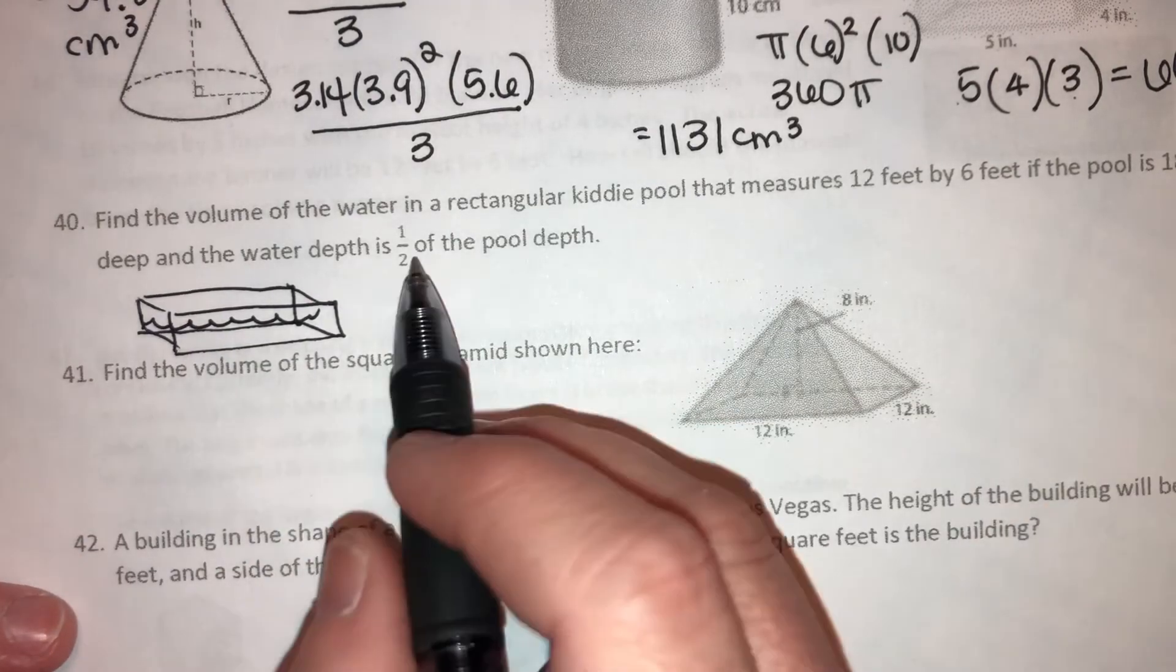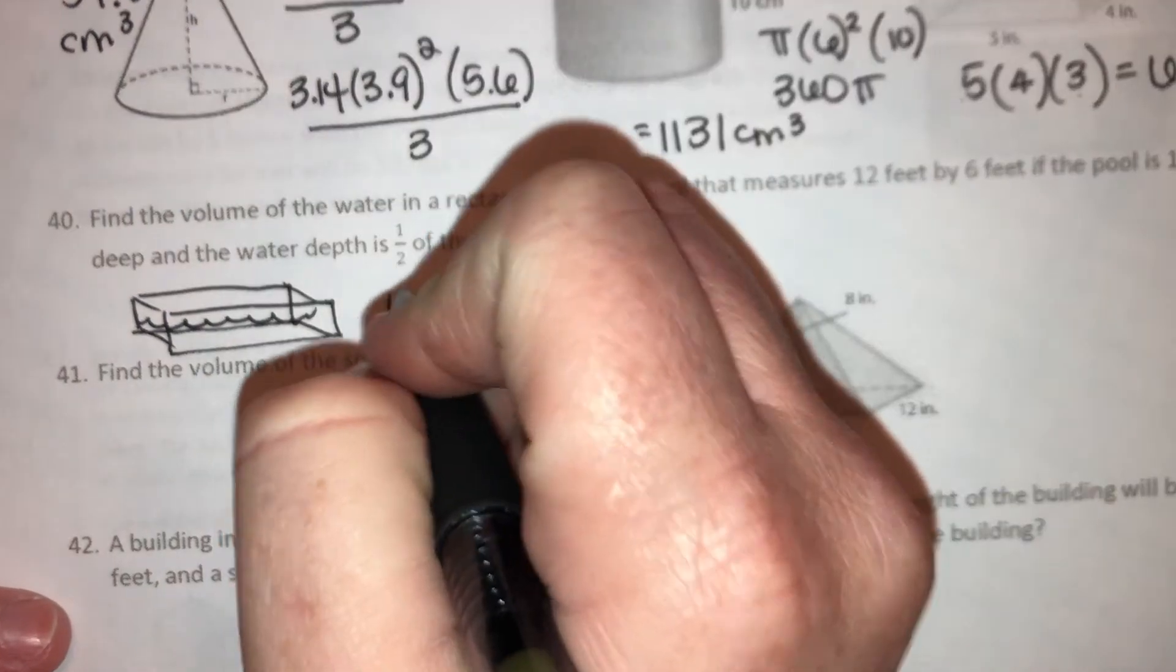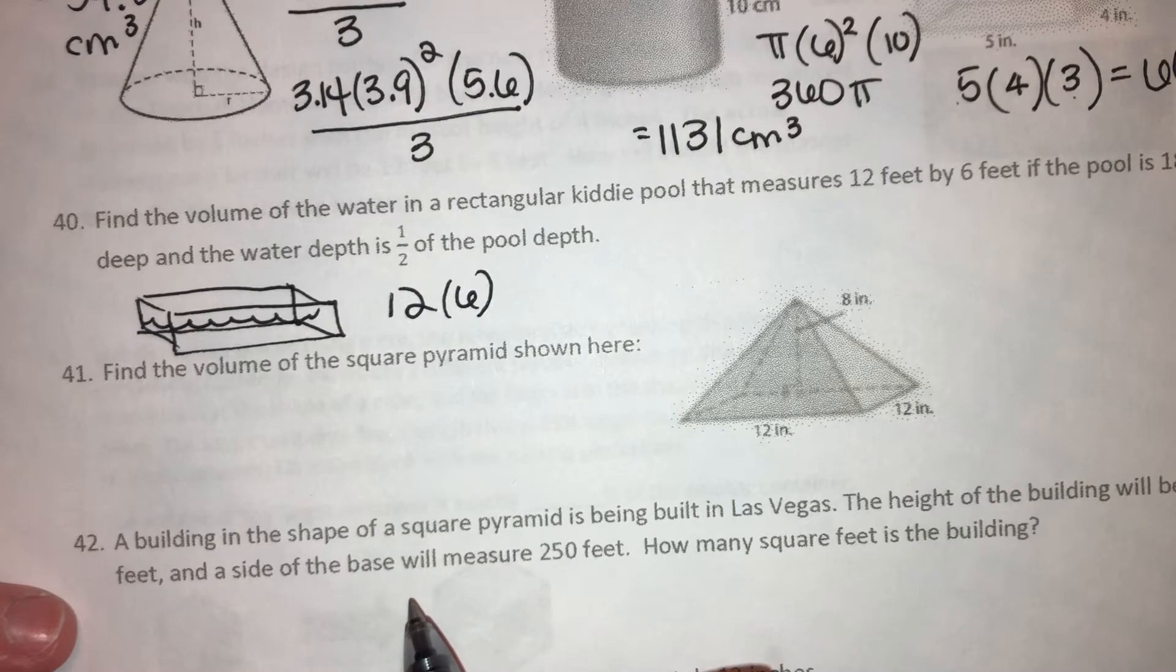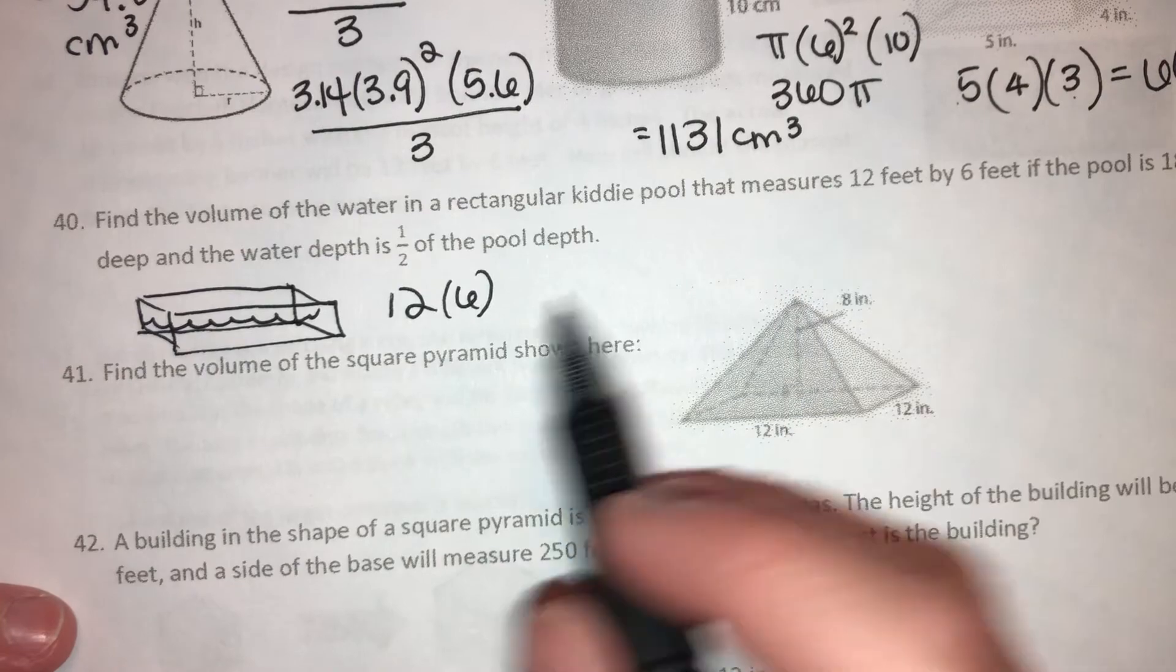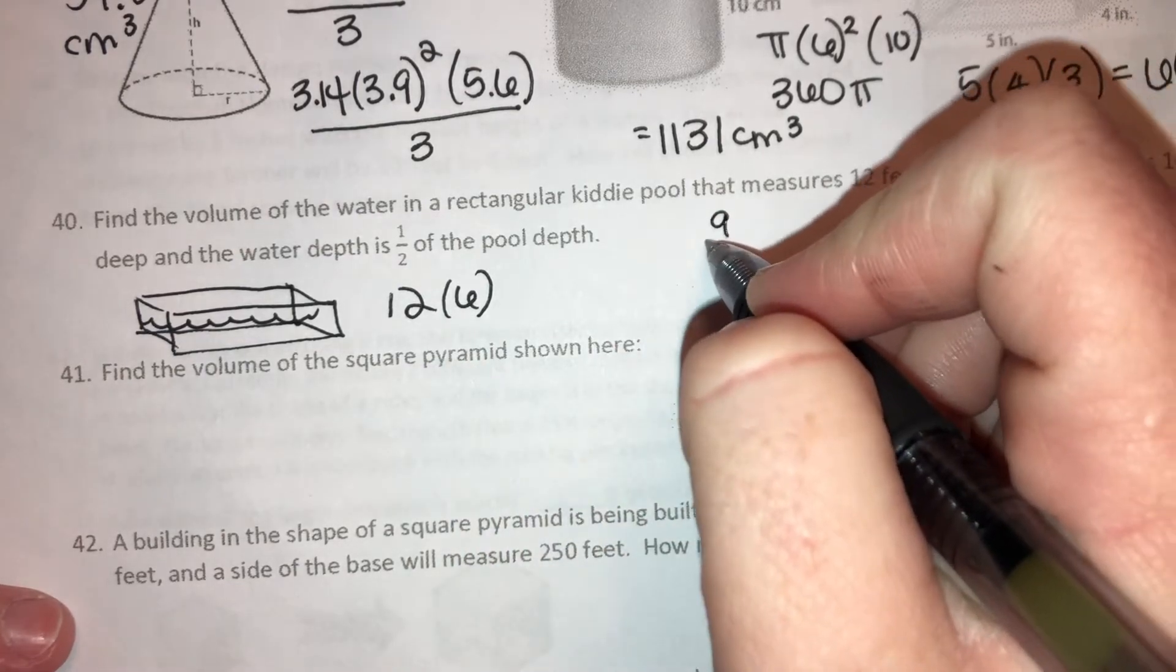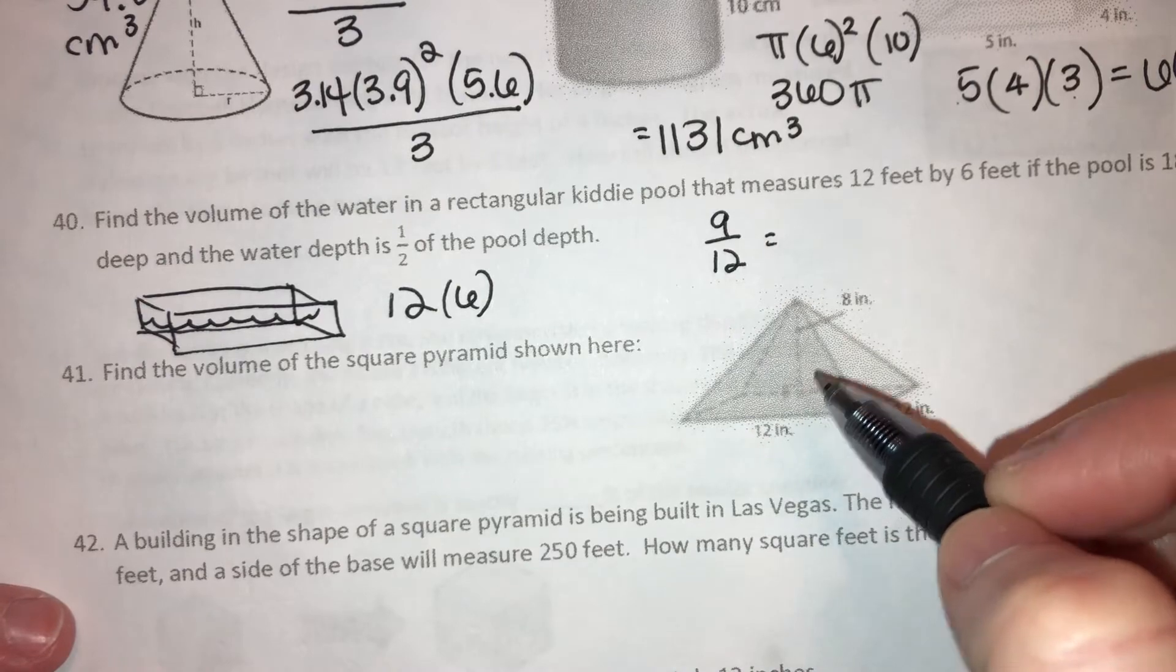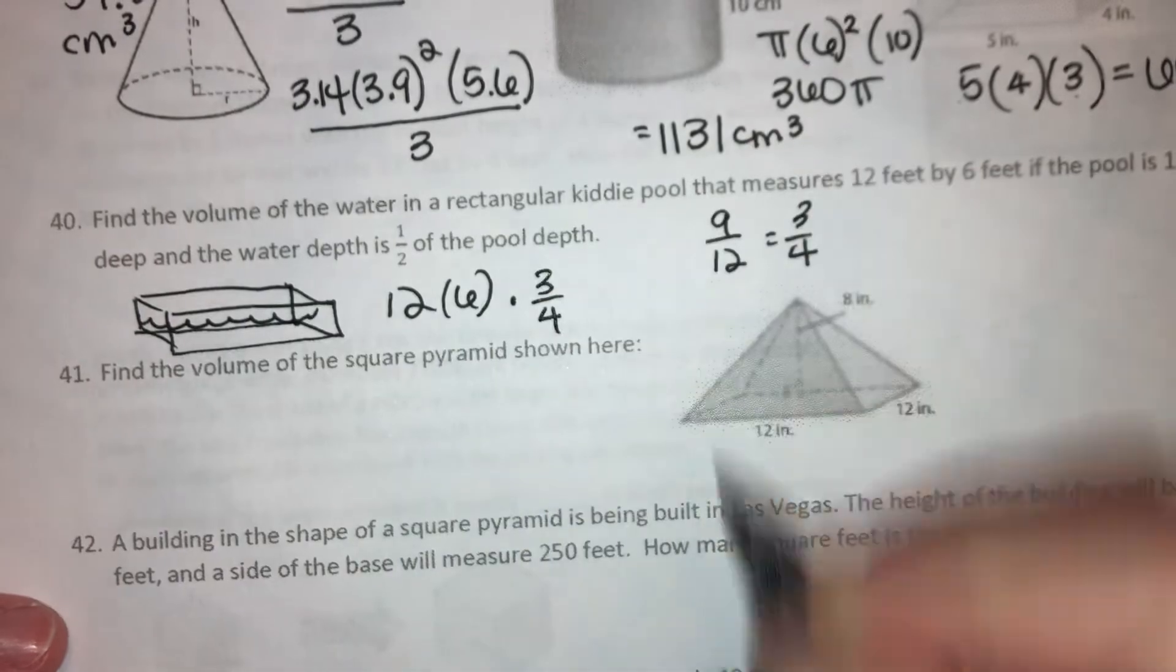So we gotta kind of think of the dimensions, how much water is there, right? And it doesn't really have waves in it. It's just my drawing. All right, so if it's 18 inches deep and only half of that's filled up, then it's 9 inches deep of water. So we're gonna multiply 12 times 6. And then 9 inches is the depth of the water, but we wanna put it in feet because the length and the width of the pool is in feet, right?